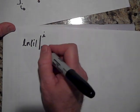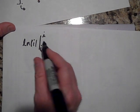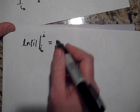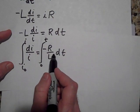Now this is I naught rather, so that's I naught and I. That equals, when I take the integral on this side, that's just going to be, it's going to go to negative R over L times t.